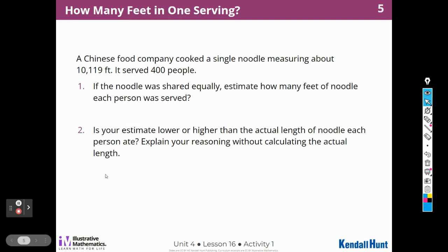Alright, here's our first activity. How many feet in one serving? A Chinese food company cooked a single noodle measuring about 10,119 feet and it served 400 people. If the noodle was shared equally, estimate how many feet of the noodle would each person be served? So if I'm going to estimate, again, I'm going to round. I'm going to round that to 10,000 divided by 400.